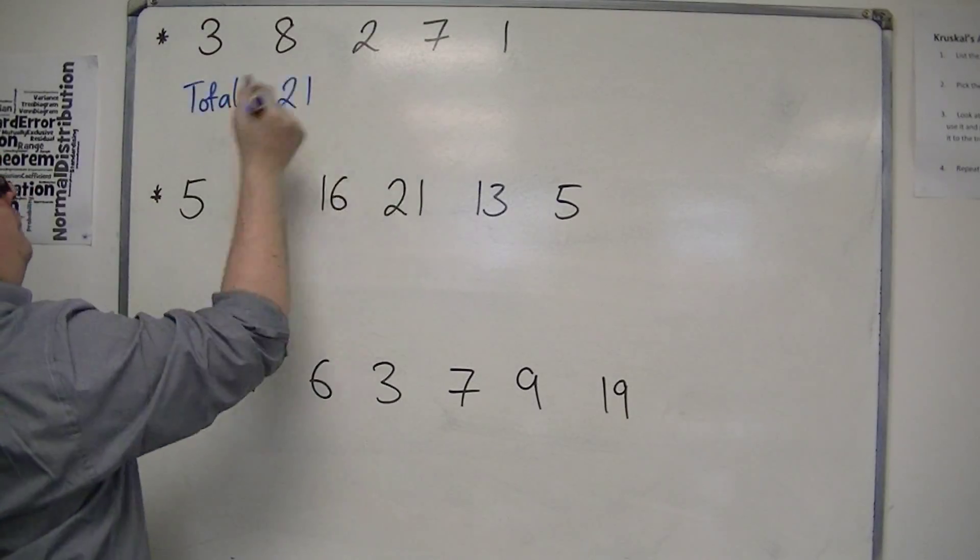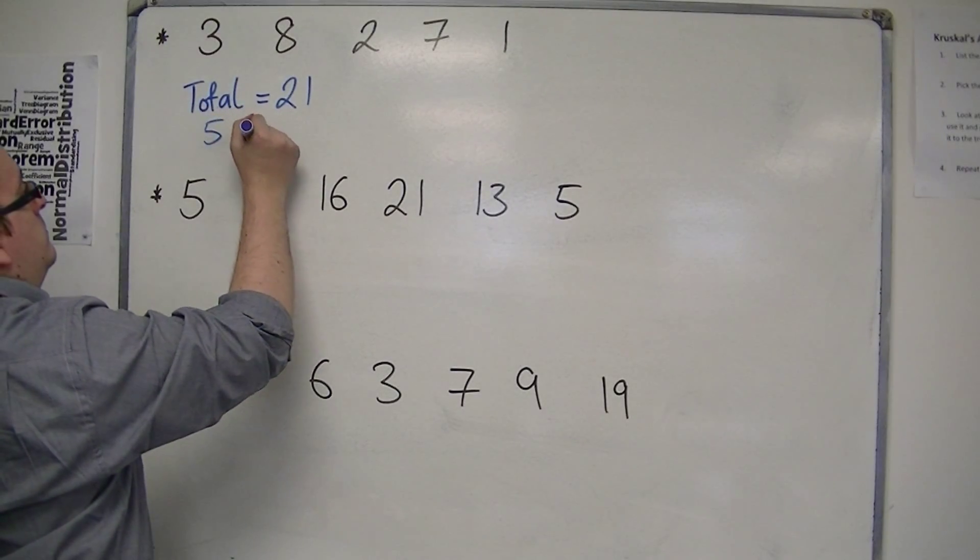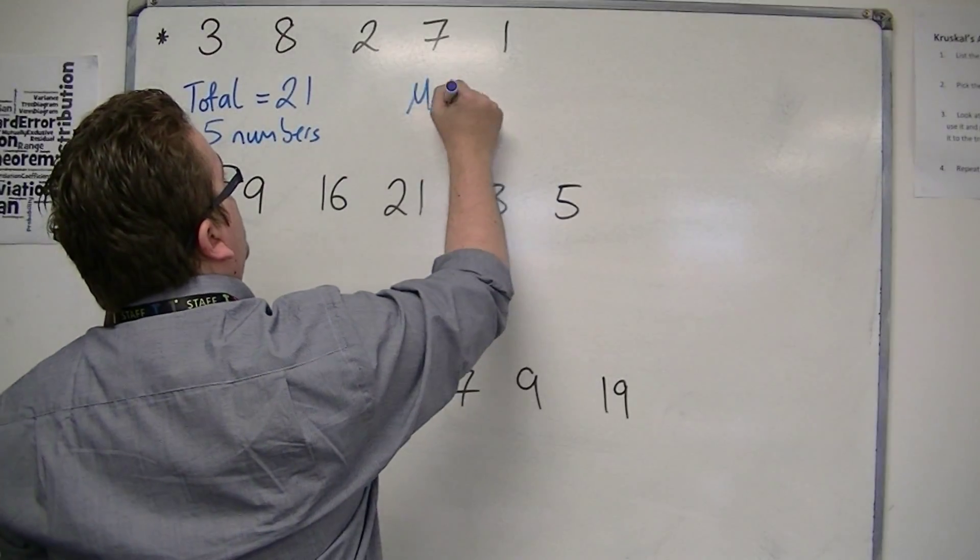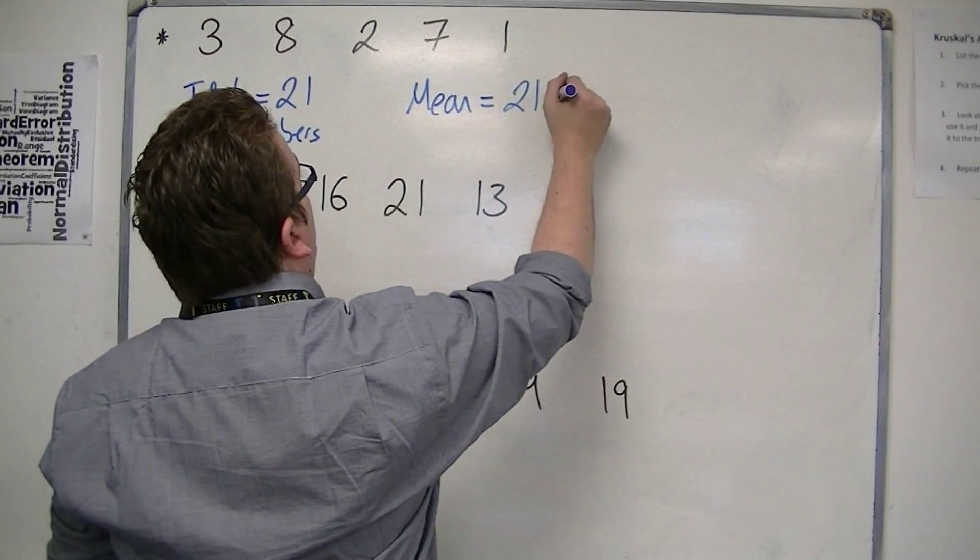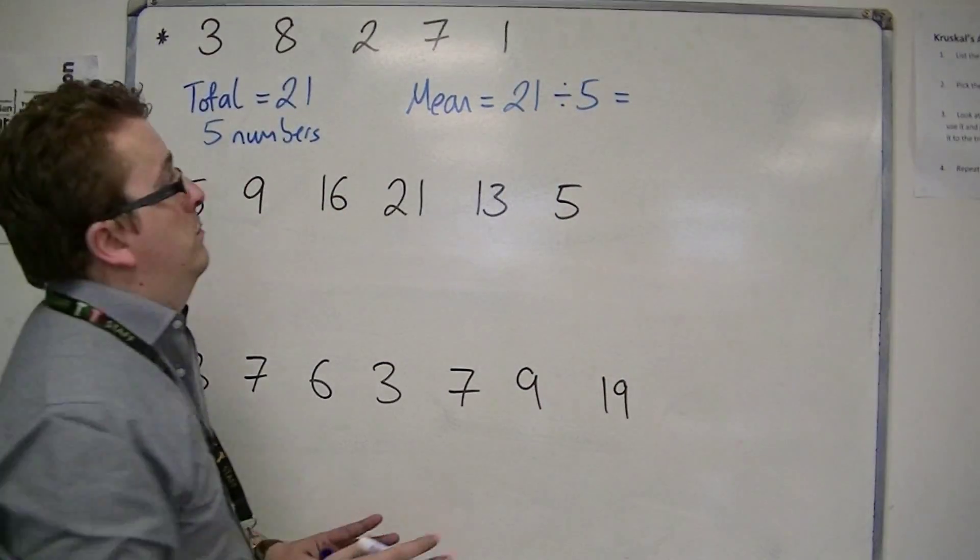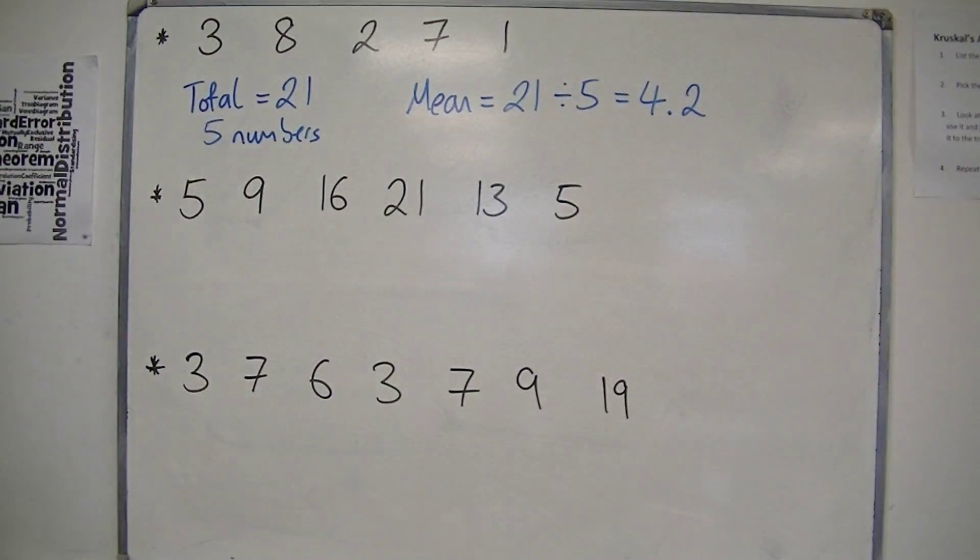Okay, and there are five numbers. So five, well I'll just write five numbers, five bits of data. So the mean is 21 divided by 5, which is 4.2. So in this case the mean is 4.2.